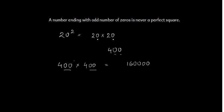So in any case, a number ending with odd number of zeros will never be a perfect square.